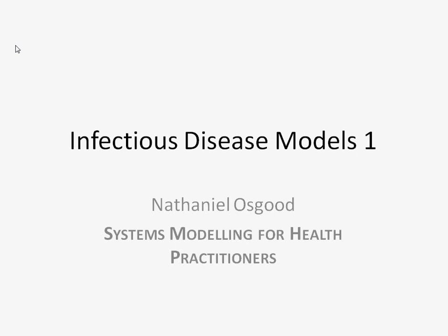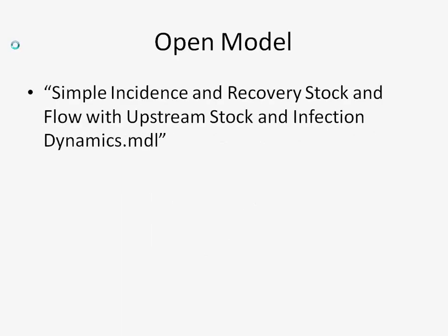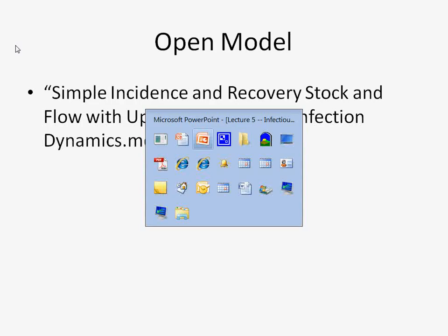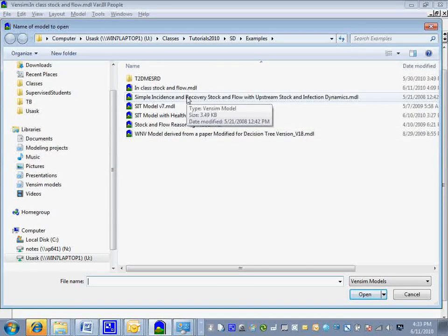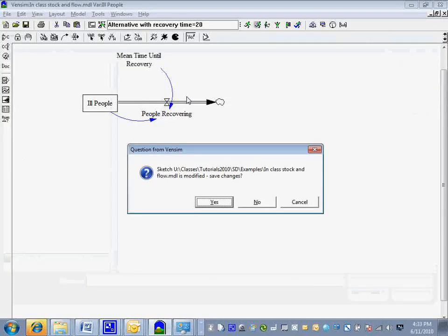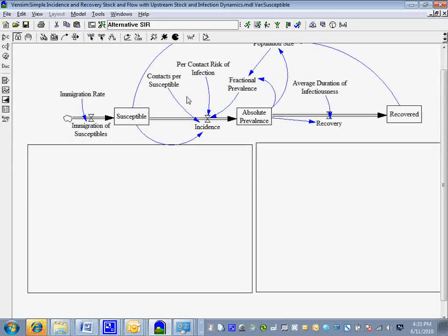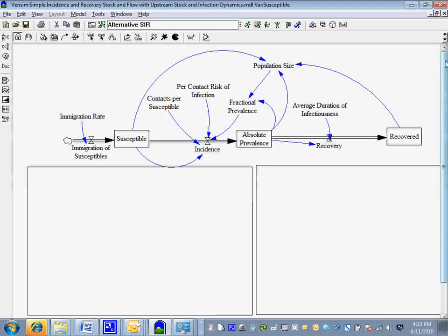One of the types of models that are very popular in these areas are infectious disease models. To give a quick glimpse of these models, I'd like us to open up the model called 'Simple Incidence Recovery Stock and Flow with Upstream Stock and Infection Dynamics,' which should be in your examples area. So here it is — simple incidence and recovery stock and flow with upstream stock and infection dynamics.